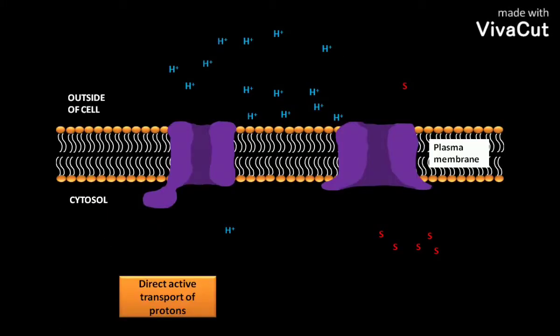In direct active transport of protons, first ATP is hydrolyzed to form ADP and Pi. The energy released during ATP hydrolysis is directly used to transport protons from the cytosol to the outside of the cell through a transport protein called transport ATPase or ATPase pump.